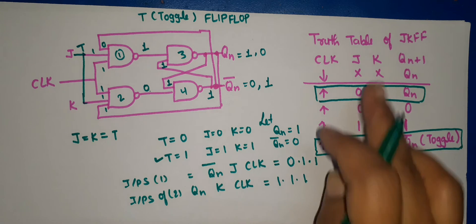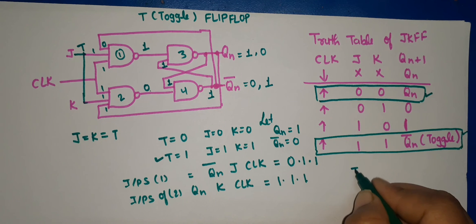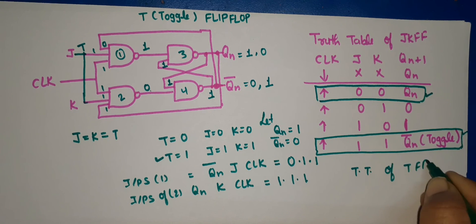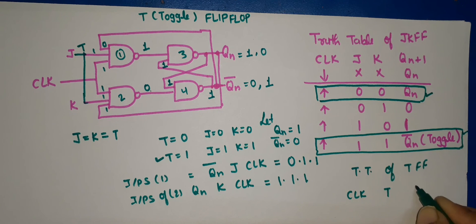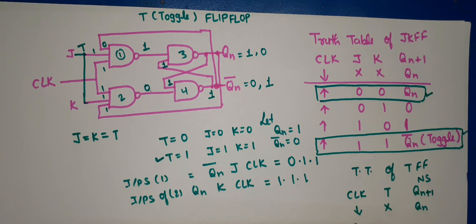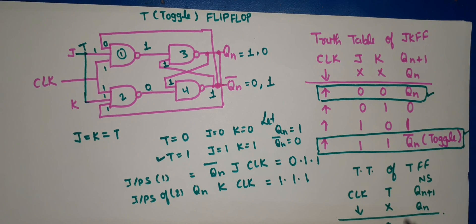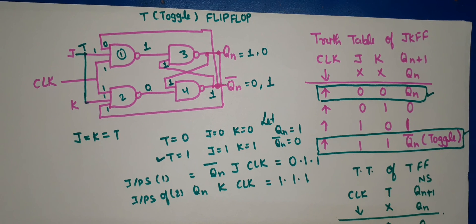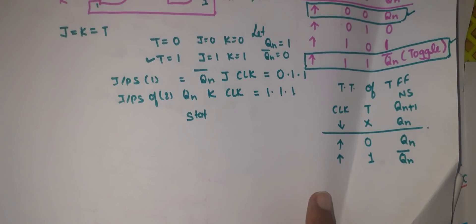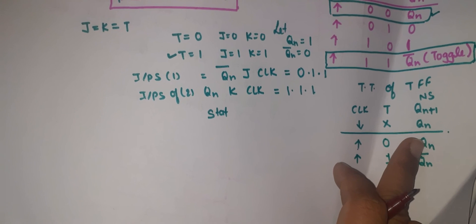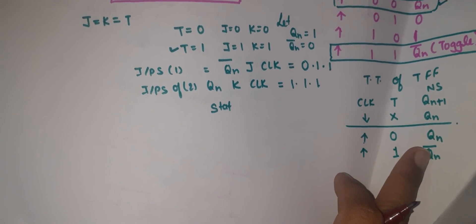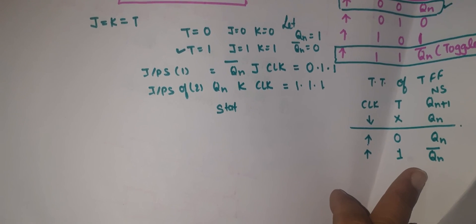Now, what is the truth table of the T flip-flop? The first input is clock, the second input is T, and the output is the next state. When clock is low, regardless of T's value, there is no change in QN — the next state equals the present state. When clock is high and T is 0, the output remains QN. When clock is high and T is 1, the output becomes QN bar — the complement of the present state. This is the truth table of the T flip-flop.